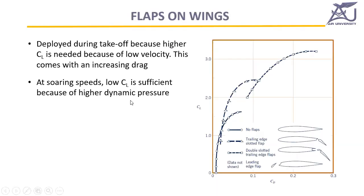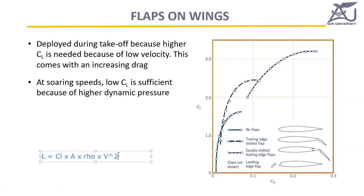We move the flaps to change the airfoil shape. Initially during takeoff the airplane speed is very low. Lift equals the coefficient of lift multiplied by area multiplied by half rho V squared. So to achieve the required lift at low speed, we need a higher coefficient of lift. When cruising at high altitude, the speed is high and we want minimum drag, so we retract the flaps and minimize the coefficient of lift needed.